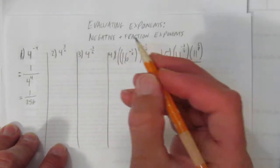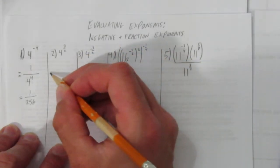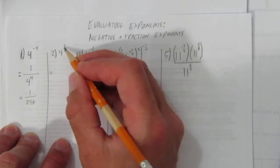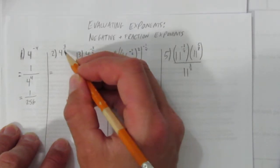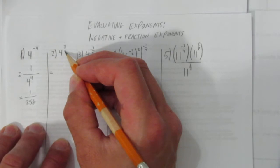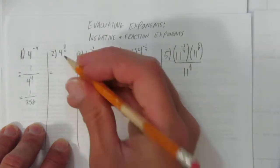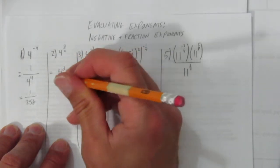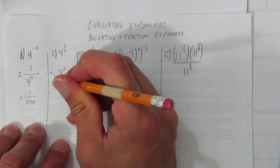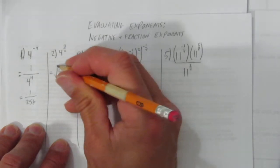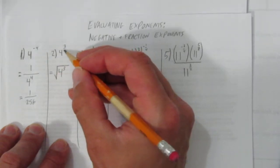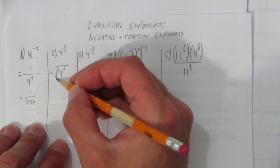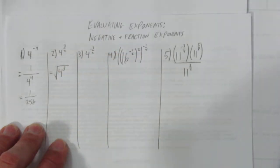What about a fractional exponent? When you have an exponent that's a fraction, the top number is the power, the bottom number is the root. So we're going to do 4 to the power of 3, all to the root of 2. The root of 2 is square root — you can put a 2 here, or leave the square out.